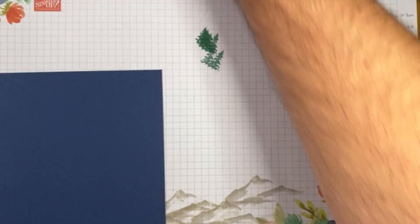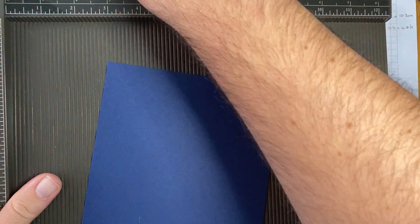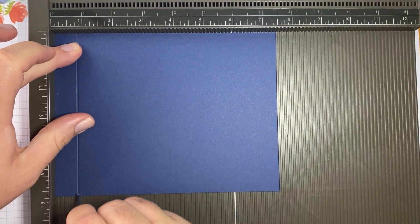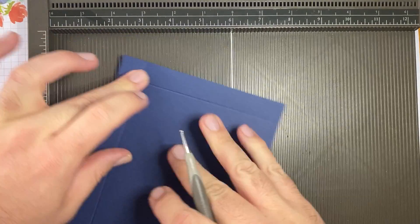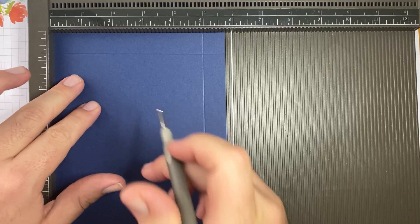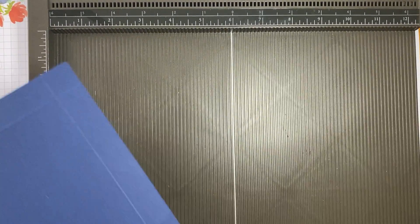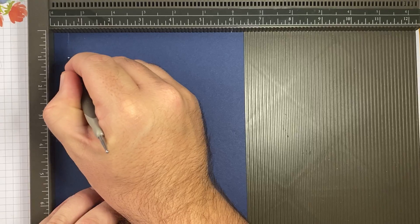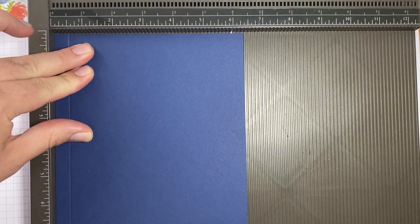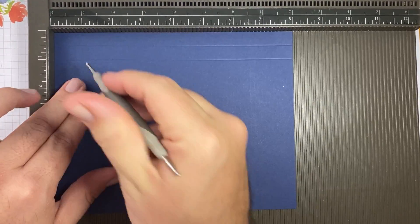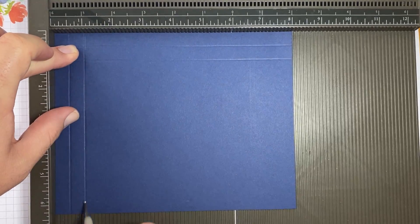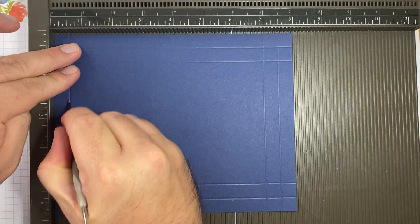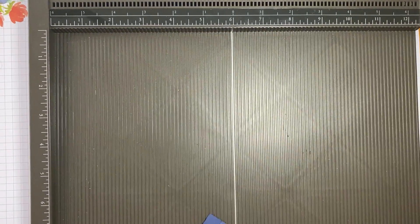I'm going to bring in my scoreboard. I am going to score this at three quarters of an inch on all four sides. So that's that part done. And I'm going to score the lid at half an inch and one inch on all four sides.